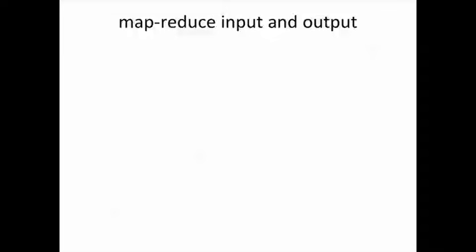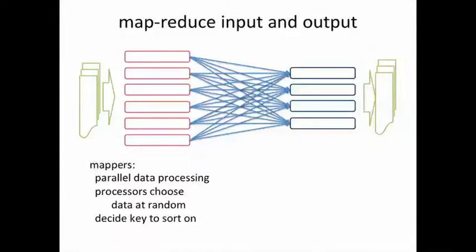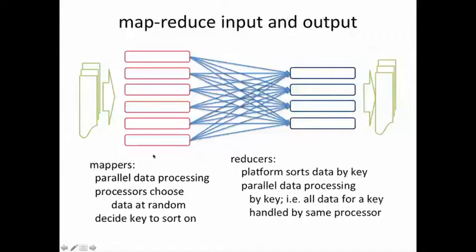Let's remember MapReduce one more time. We have mappers that read the data and decide based on your map function which key to sort this data on. Then the reducers get the data sorted by the key that you decided in the map function. The platform does the sorting, and the reducers process the data for every key in parallel and then output the data. This is the MapReduce model.